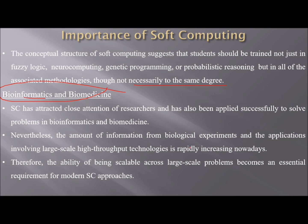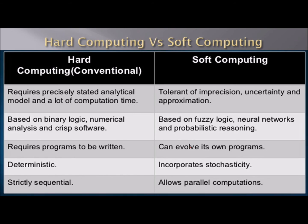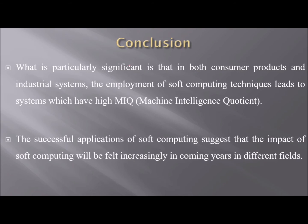The differences between hard computing and soft computing: hard computing requires a precisely stated analytical model and a lot of computation time, while soft computing is tolerant of imprecision, uncertainty, and approximation. Hard computing is based on binary logic, numerical analysis, and crisp software, while soft computing is based on fuzzy logic, neural networks, and probabilistic reasoning. Hard computing is deterministic and strictly sequential, while soft computing incorporates stochasticity and allows parallel computations.